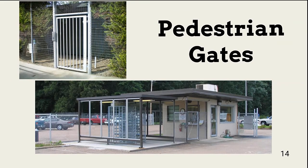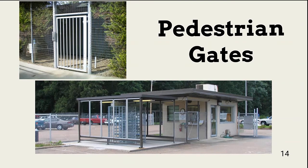Pedestrian gates, like vehicle gates, can be manned or unmanned. Unmanned pedestrian gates for moderate to high security should include a key or cipher lock, as shown in the top photo. A guarded and more secure solution is shown at the bottom.